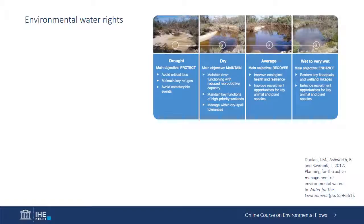In the Murray-Darling Basin, the environment has water rights just like other water users, but while other water rights are acquired and water diverted by individuals or companies, the water rights of the environment are acquired by the Australian government on behalf of the environment, and decisions about diversions are made by environmental managers. In the year 2014–2015, surface water rights for environmental purposes amounted to just over 4 million megaliters, which equaled approximately 25 percent of total water rights. Allowable diversions in any given year depend on the cap, conditions in the basin, the physical availability of water, and the objectives of the environmental water managers. Acquiring these water rights was an arduous and expensive task, as you'll learn in the case study by John Canalen.